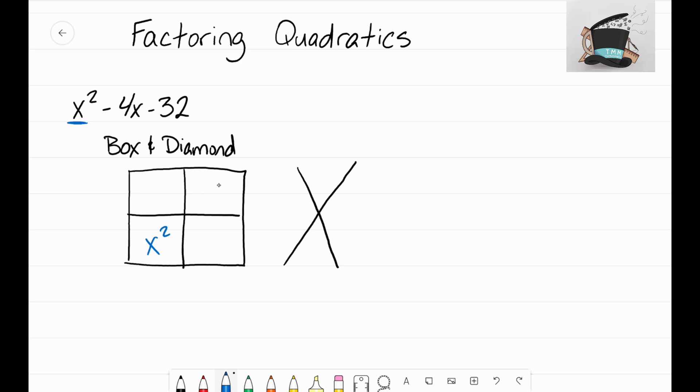Now directly opposite, the diagonal opposite up here in the top right, what we're going to put there is our constant term. It's the term in your expression that has no x on it. It's just the constant term, just the number. So I'm going to take this negative 32 and I'm going to write that in my top right corner.